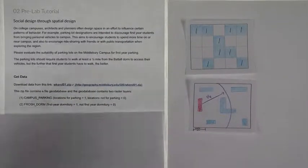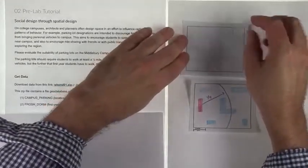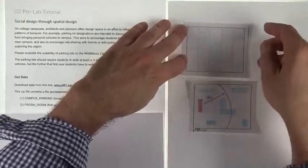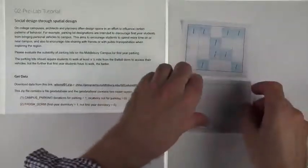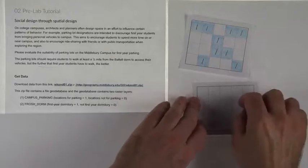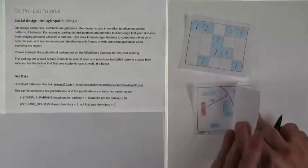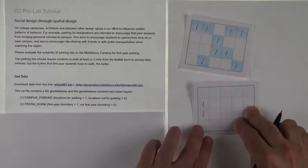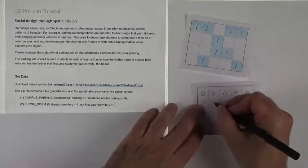And then you're going to have another layer that's going to be the same exact size, right? Same exact extent in the sense of number of rows, number of columns, cell size is the same. But this one is going to represent the first year dormitory. And in this one, the cells are going to get a one if they overlap with the dormitory. And then they're going to get a zero if they do not.